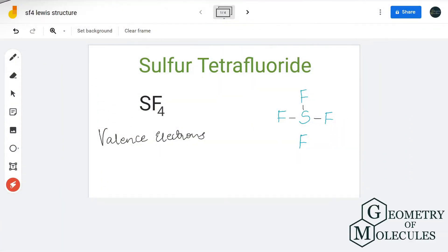Hi guys, let's do the Lewis structure for sulfur tetrafluoride SF4. To do that, let's go through its total number of valence electrons by adding up the valence electrons for both sulfur and fluorine atoms.